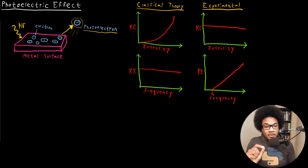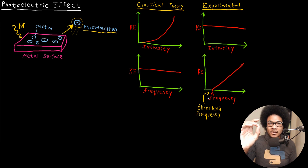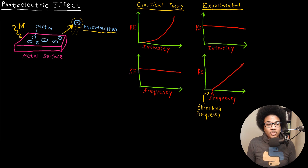The experimental plot shows no dependence of kinetic energy on intensity. When you vary the frequency, kinetic energy increases linearly — but it doesn't start at zero. It starts at a specific point known as the threshold frequency, denoted as nu-naught. You have to impinge on the surface with at least that specific frequency of radiation, and anything above that will increase the kinetic energy.